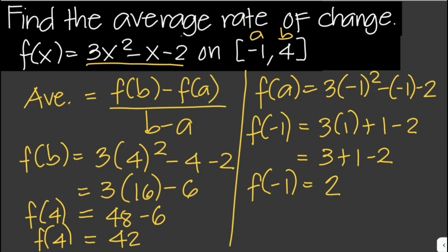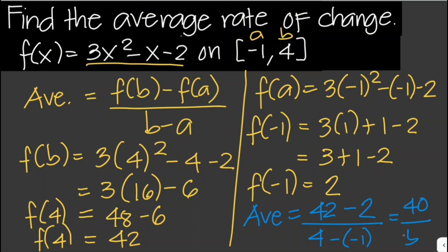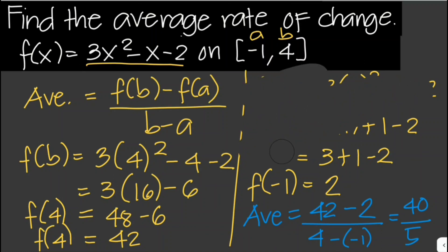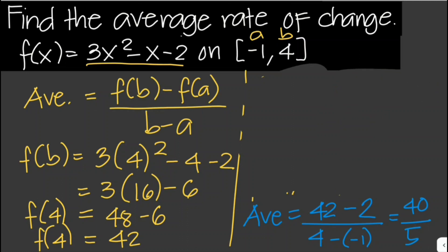Now we can solve for the average rate of change. The average equals f of b, which is 42, minus f of a, which is 2, over b minus a, which is 4 minus negative 1. So this is 40 over 5. Therefore, the average rate of change is equal to 40 over 5, or 8.